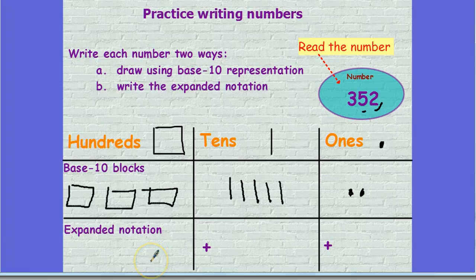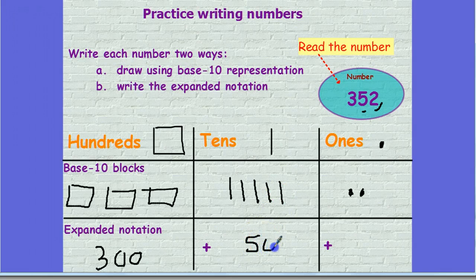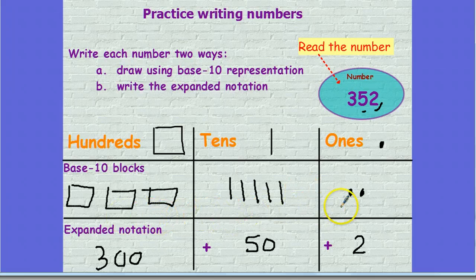Then I'm going to take those base 10 blocks that I drew and make them into numbers. I have 100, 200, 300 for those three hundreds. Then 10, 20, 30, 40, 50 for my tens — that's the number 50. And for my ones, I have one, two ones. So 352 can look like this in base 10 blocks, and it can also look like this in expanded notation when we break apart that number.